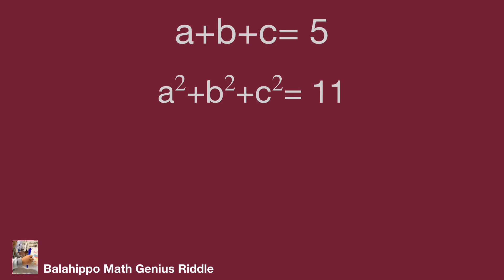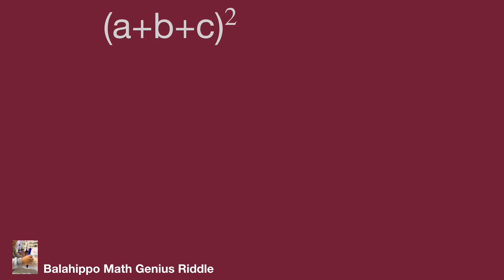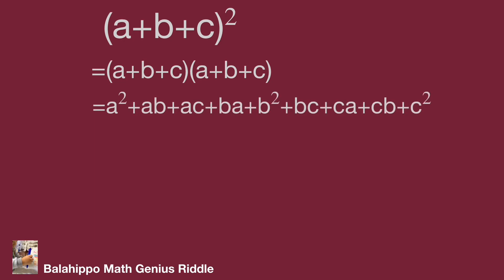The given equations are: a plus b plus c equals 5, and a squared plus b squared plus c squared equals 11. We have a squared, b squared, and c squared in the second equation. I'm going to generate squares from the first equation. Then I square a plus b plus c. Quantity a plus b plus c squared equals quantity a plus b plus c times quantity a plus b plus c. Multiply these two quantities and expand it, as the video shows.